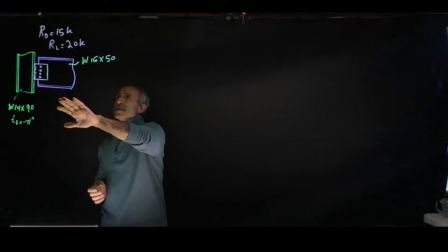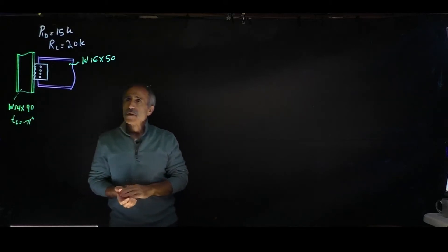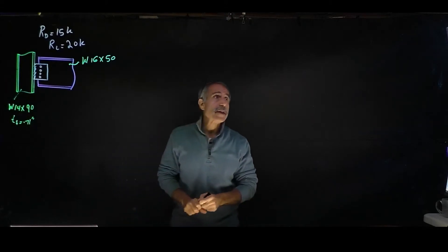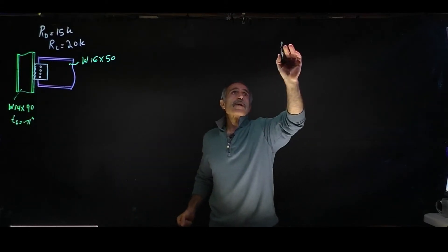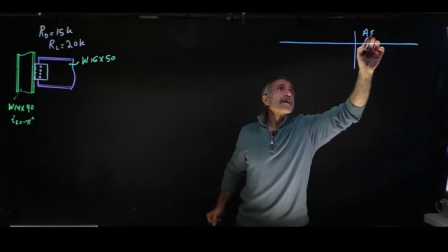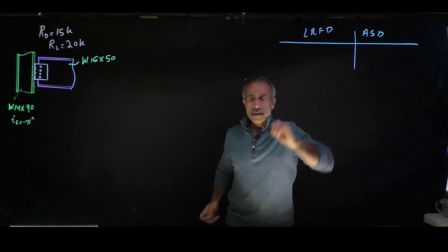The end reaction for the beam is dead load 15 kips and live load 20 kips. So the first thing we're going to do is calculate our load based on both ASD and LRFD.